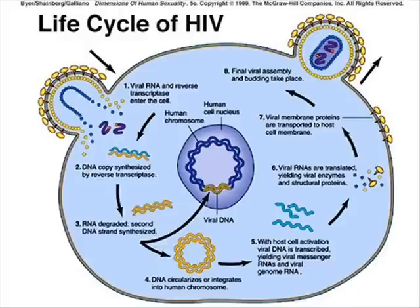Once the capsid enters the T cell, it releases the viral RNA and necessary enzymes into the cell. After this, reverse transcriptase, one of the enzymes from the original HIV virus, reverse transcribes the single-stranded viral RNA into double-stranded viral DNA. Once this process completes, the newly formed DNA enters the host nucleus. Once inside, the enzyme integrase splices the viral DNA into the DNA of the cell, creating a provirus. After this has been completed, the virus can now use the host cell to begin replication of copies of the disease.